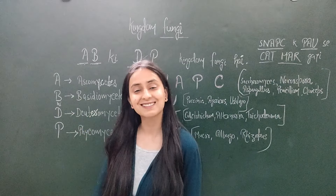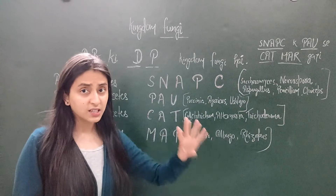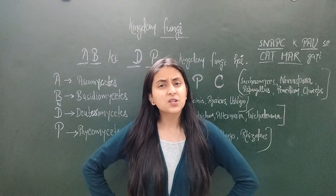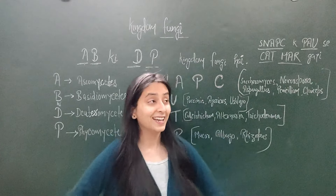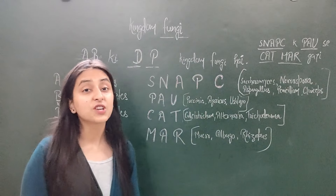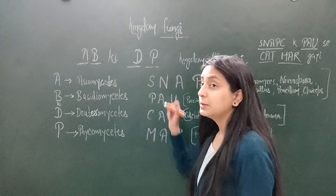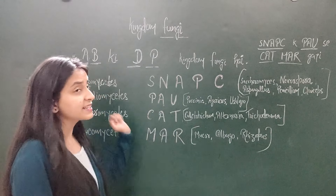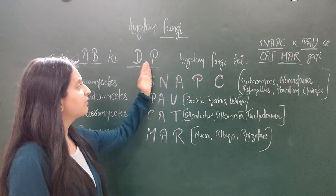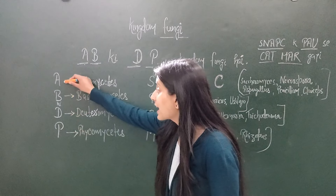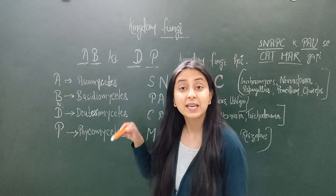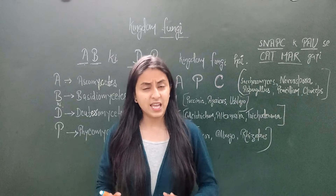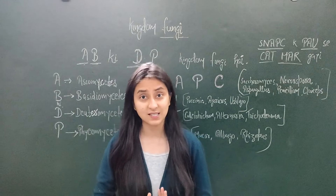Chalo, ab jaante hain Kingdom Fungi ki classes aur usse related examples. Kingdom Fungi ki char classes hoti hain. Naam yaad karne mein bade problem aati hai. Trick yeh hai — Amitabh Bachchan ki DP fungi hai! AB ki DP fungi hai. Yeh hain char classes: Ascomycetes, Basidiomycetes, Deuteromycetes, aur Phycomycetes. AB ki DP fungi hai — yeh ho gayi 4 classes of Fungi.